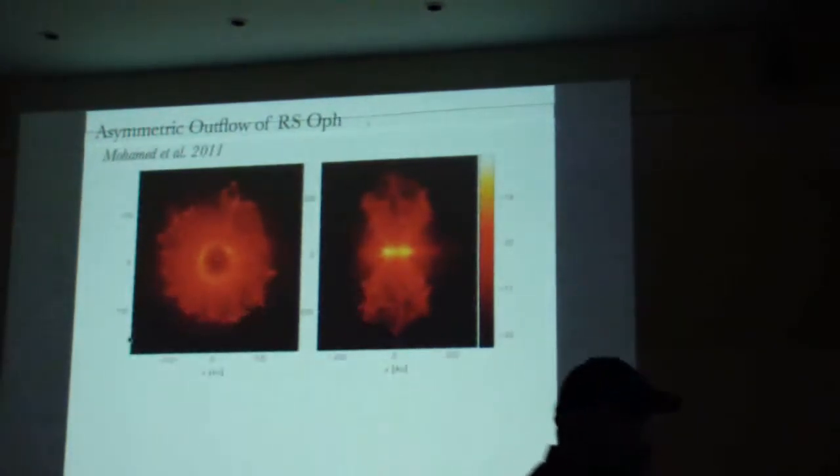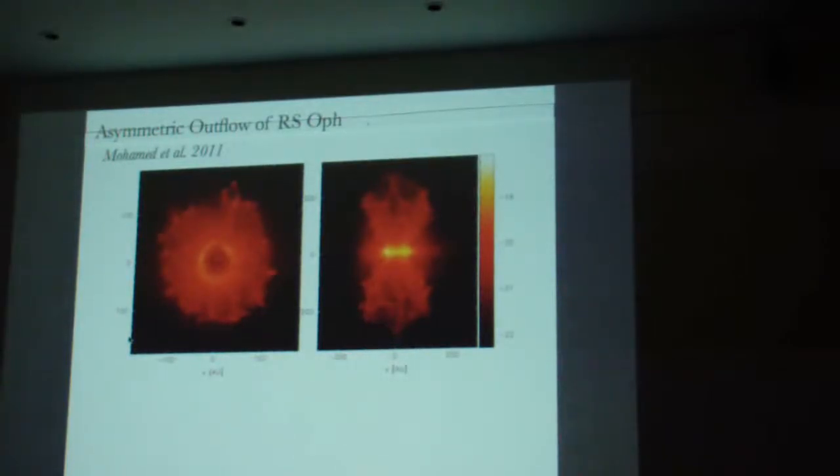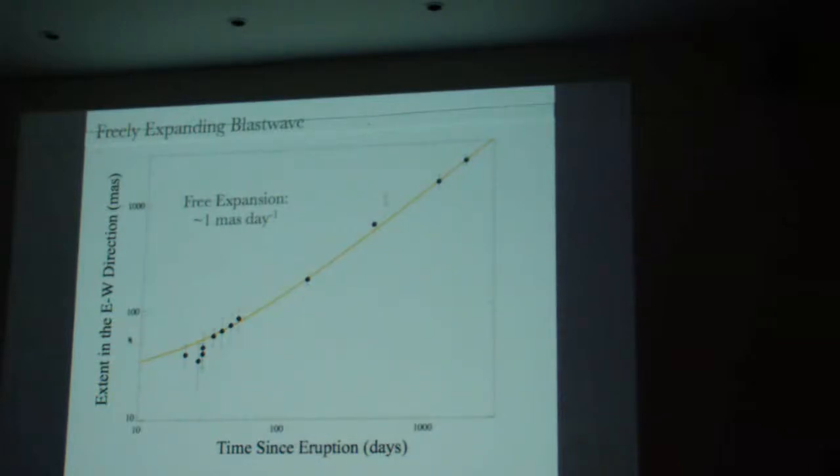I agree, we don't really know what's doing the shaping. Is it the accretion disk? Is it the circumstellar material? Or is it the nova outburst itself that's bipolar? We won't be able to disentangle that.